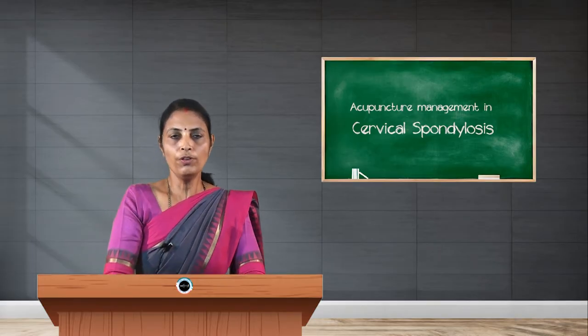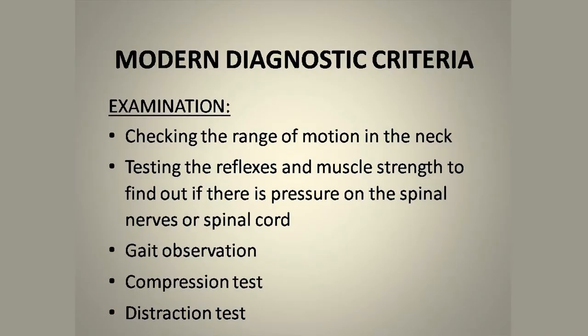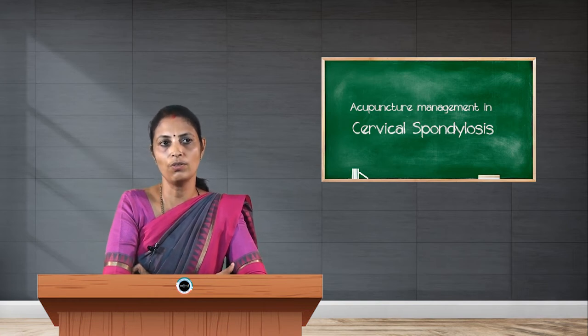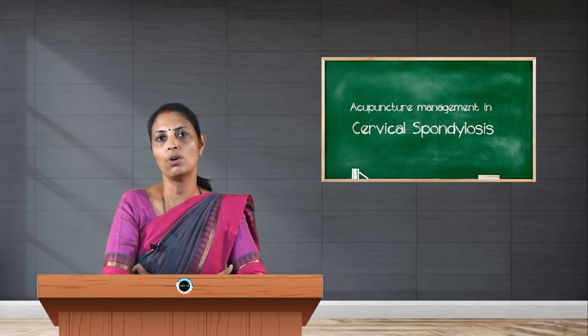Before treating through any system, proper diagnosis is very important. There are two diagnostic criteria we can consider and correlate, because perfect diagnosis leads us towards perfect treatment. Modern diagnostic criteria include first, clinical examination — checking the range of motion in the neck, testing the reflexes and muscle strength to find out if there is any pressure on the spinal nerves or spinal cord.